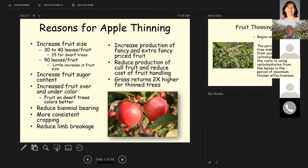More consistent cropping as a result of apple thinning. You get reduced limb breakage. You increase the production of fancy and extra fancy price fruit, reduce the production of cull fruit, and reduce the cost of handling small fruit that you have to send off for cider or drop on the ground. Gross returns are generally thought to be about two times higher for thin trees.